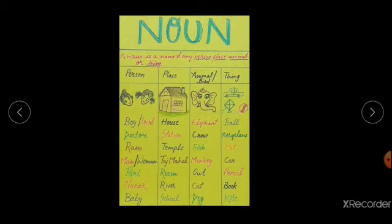What is noun? Noun is a kind of word that is usually the name of something such as a person, place, animal, or thing. In easy language, noun is the name of any person, place, animal, or thing. And this is the definition of noun also.